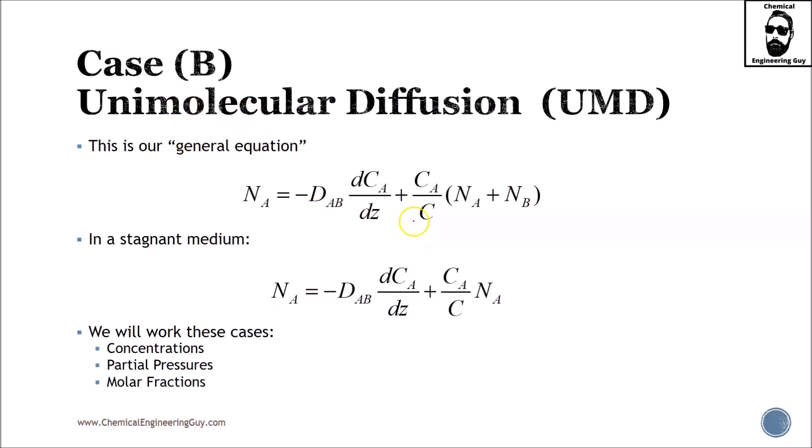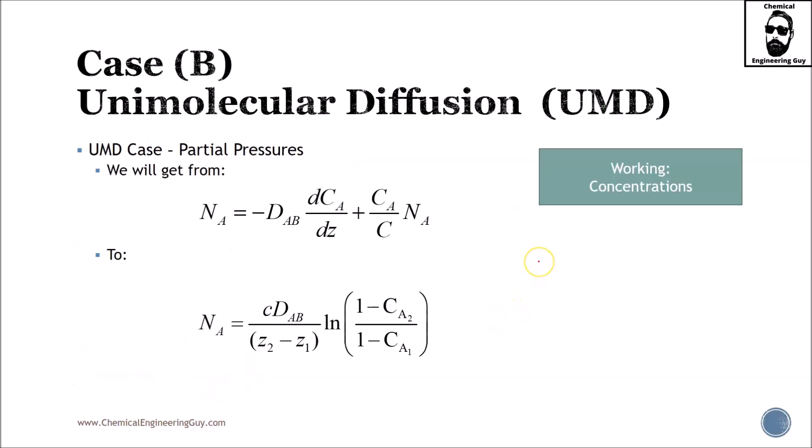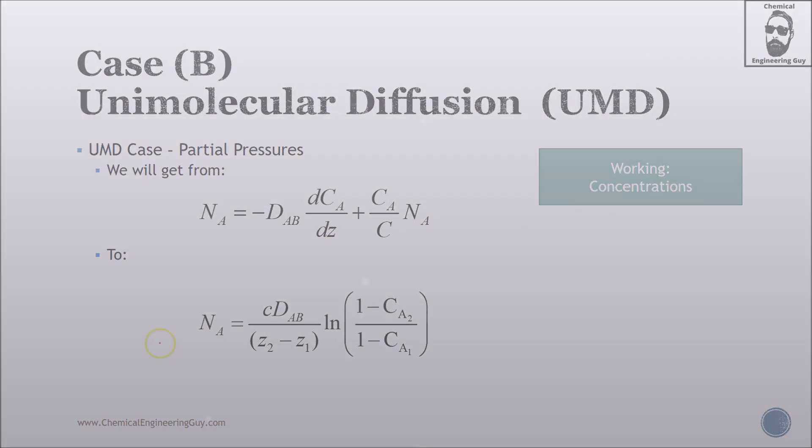So, this is our general equation, which we will be working with in UMD. So actually, this is valid whenever you apply Fick's law for any case. But for a stagnant medium, we just need to get rid of B, and we get this part right here. Now we will work these cases mathematically to get equations ready to use for concentration, partial pressures, and molar fractions. And that's what we're going to do in the following video.